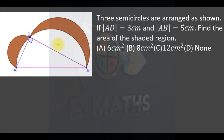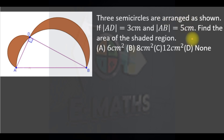We are given three semicircles arranged as shown. If AD is three and AB is five, we should find the area of the shaded region.